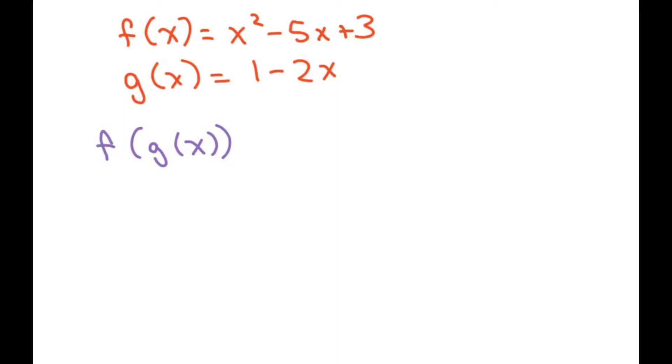So for the first one, which is the harder one, we're going to write my outer function, which is f. So I'm going to write down f and I'm going to input g of x. So everywhere there's an x, I put parentheses and I'm going to input my g of x, which is 1 minus 2x.